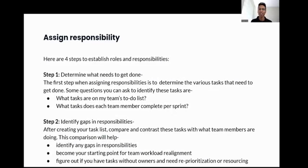Here are four steps to establish roles and responsibilities. Step one is determining what needs to get done — when assigning responsibilities, it's important to determine the various tasks that need to get done. Some questions you can ask are: what are the tasks on my team's to-do list, and what tasks does each team member complete per sprint? Step two is identifying gaps in responsibilities. After creating your task list, compare and contrast it with what team members are doing. This comparison will help you identify gaps in responsibilities, and becomes your starting point for workload realignment and figuring out tasks that have no owners and if you need additional resourcing.